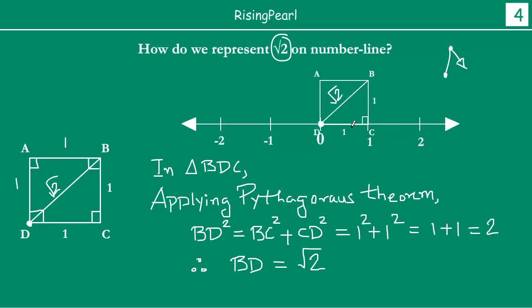if you put the pointed end on zero, and then expand the pencil end till here, and then if you draw an arc like this, cutting the number line at a point, let us call this point as X. In that case, this length, BD, will be same as OX or DX. Because this will be the same radius, an arc with the same radius.